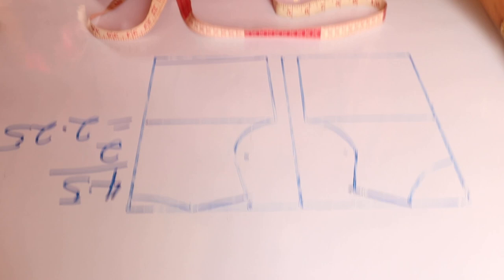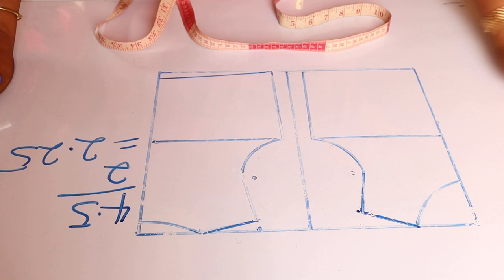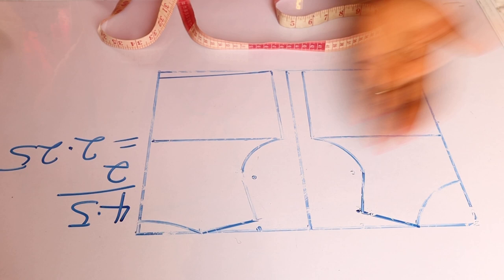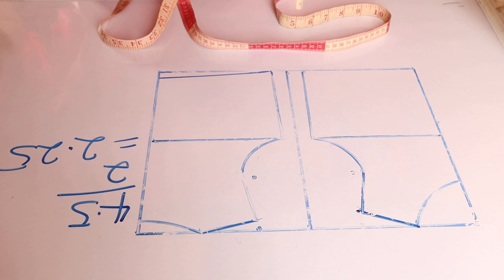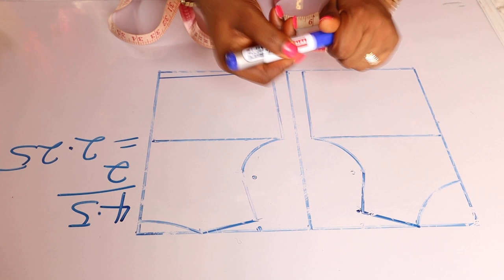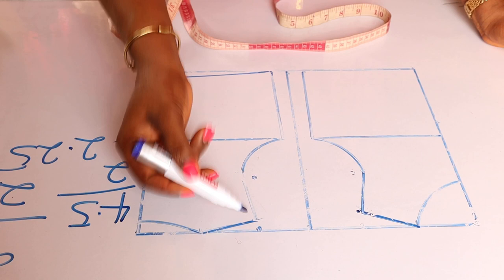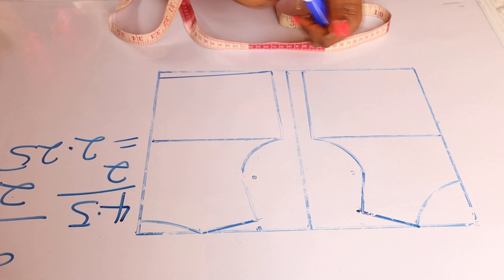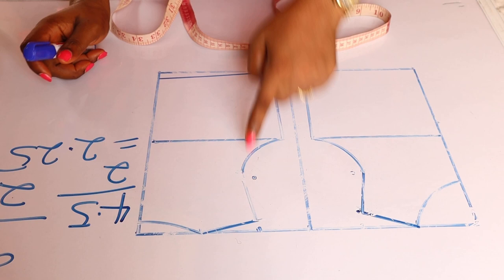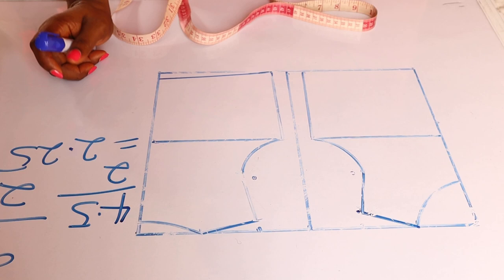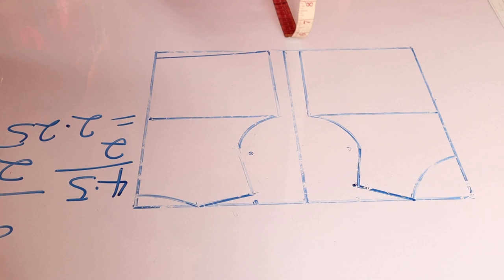The next thing is to know how to get the armhole measurement. This part is very important because if you go wrong with your armhole measurement it is going to affect the sleeve. To get it, just divide the shoulder measurement by two. The shoulder measurement I'm working with is nine — divide that by two and I have 4.5. From this shoulder slope I marked out the 4.5. I have a detailed video on how to draft a basic for this.